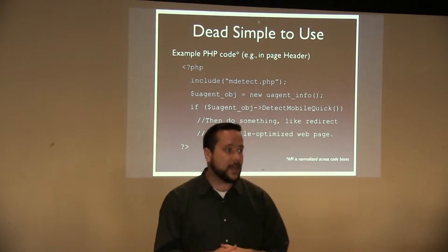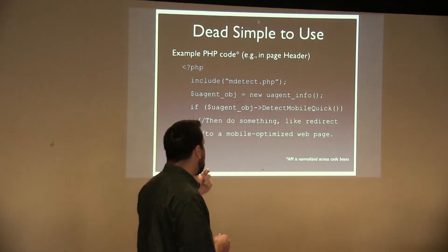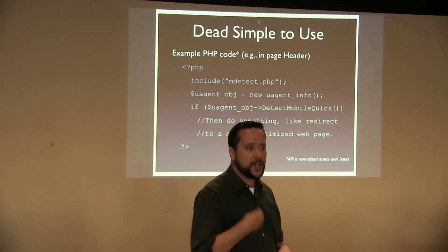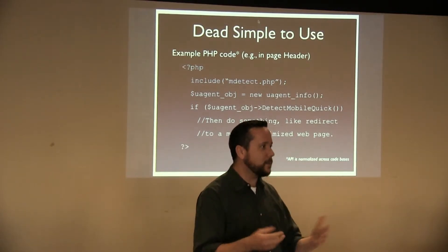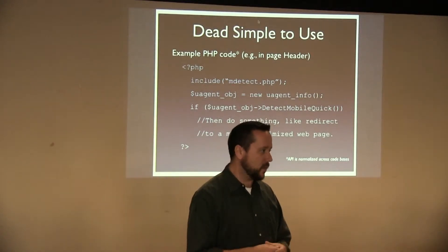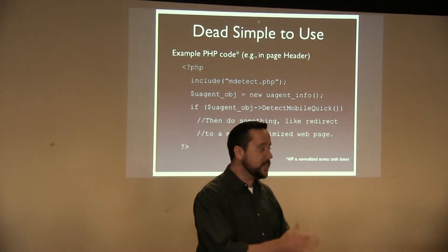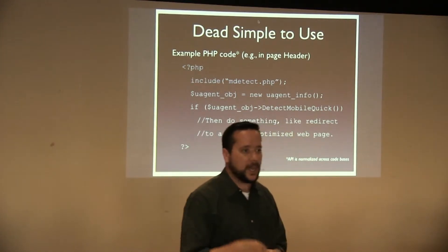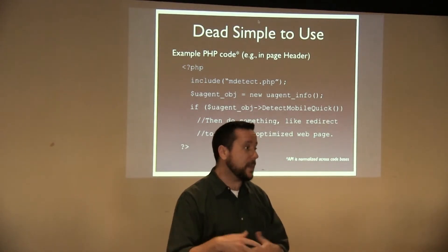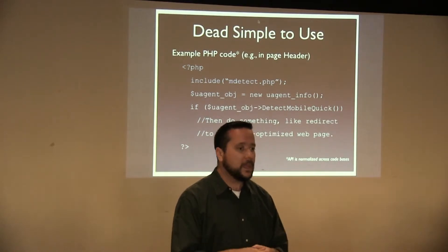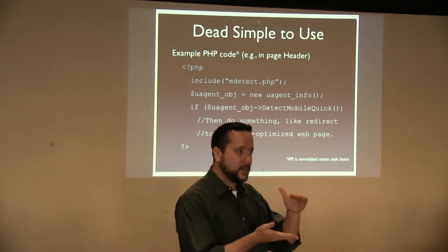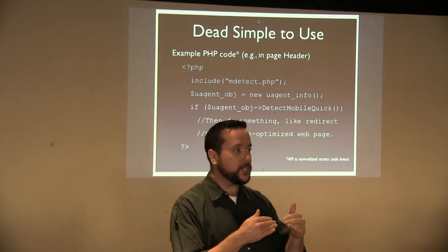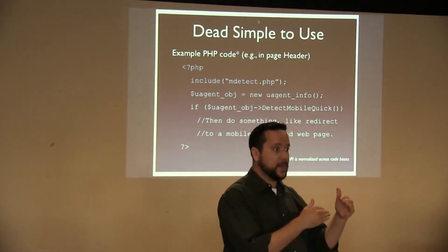Here's an example of how to integrate it. With this PHP code — I originally wrote the code in PHP — I wanted it to be dead simple. One line: include the PHP object. Second line: instantiate the object. Third line: ask it a question, whatever you're looking for. For example, if you just want to know if it's a mobile device, you can use this question here, and then if the answer is yes, do whatever you need to. For example, on a website offering an app, if it's an Android app, you can highlight a link to the Android app market, or if it's an iPhone, you can optimize a link for that market.